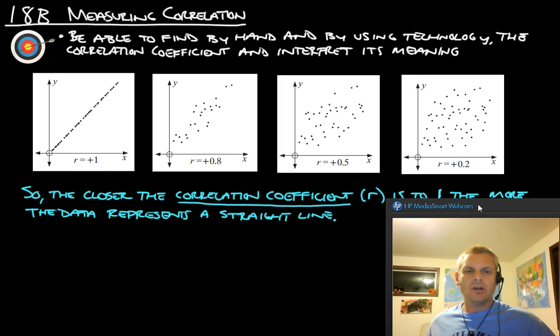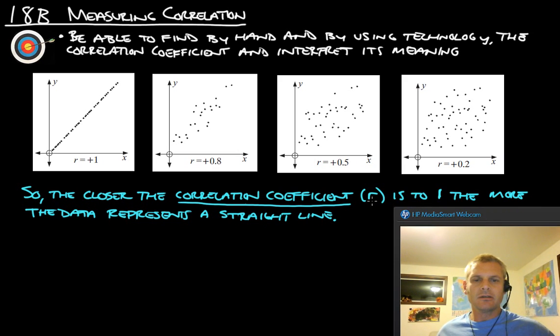So the correlation coefficient is the R, and we'll talk about what that means. The correlation coefficient is the R value here, and it says the closer the correlation coefficient is to 1, the more the data represents a straight line.